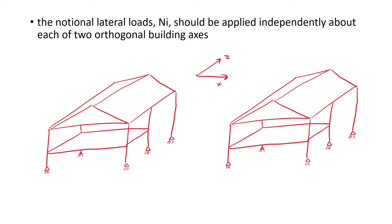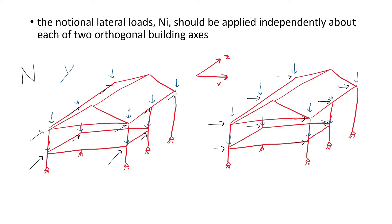Note that independently means notional loads are applied only in one direction at a time. For general structural analysis, the notional loads may be applied at each location where gravity load is transferred to the structural columns, and the load Yi is the gravity load transferred to the columns at each of these locations.